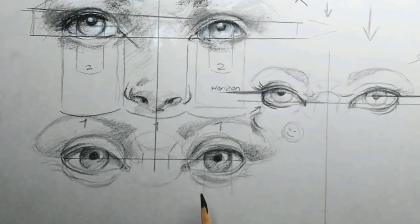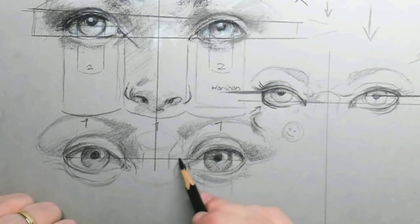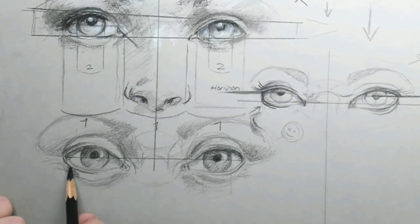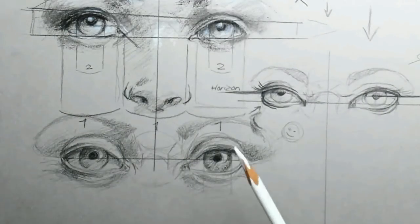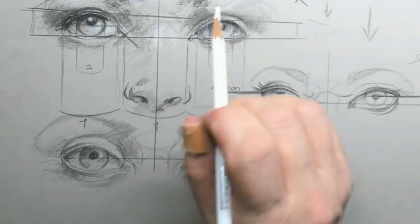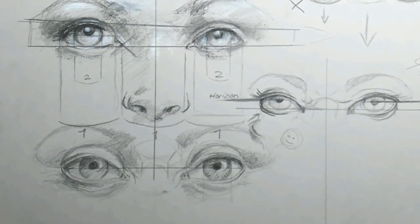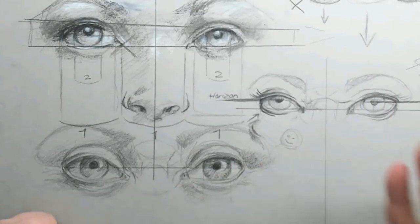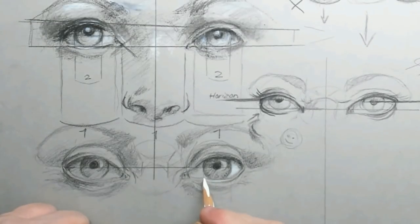When you are happy with the shape you've created, then you can get in a little more detail and a little bit more extra shadow. Just go with the feel and keep thinking 3D, keep thinking rounded. Here is the nice part for drawing on tones gray. That gray is a middle tone.